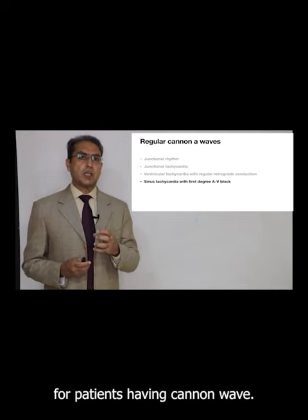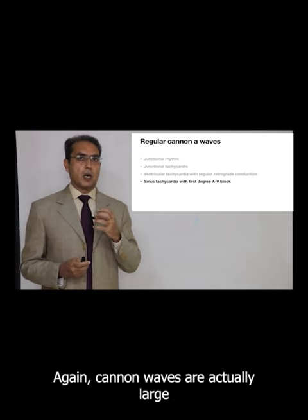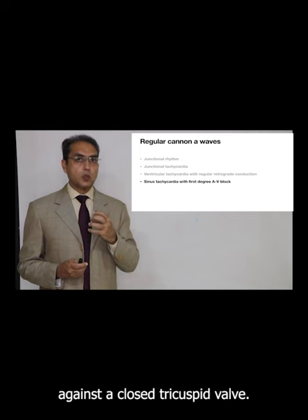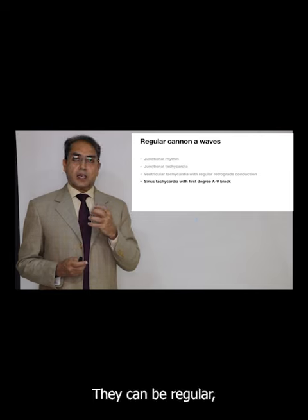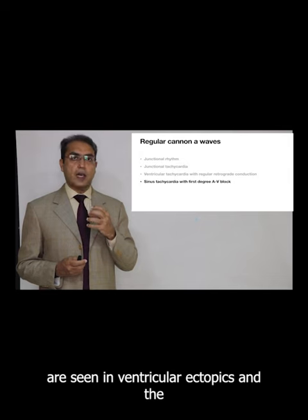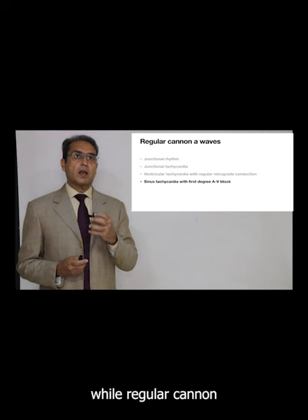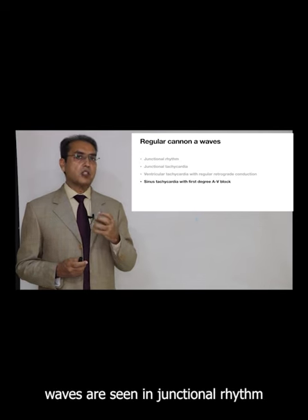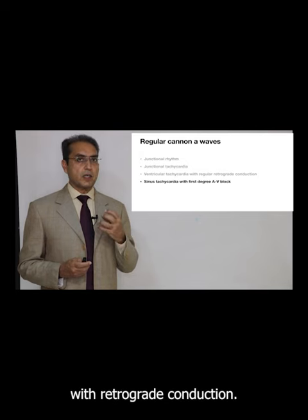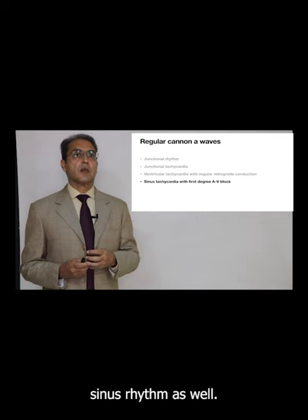So these are the various reasons for patients having Canon waves. Canon waves are large A waves because of atrial contraction against a closed tricuspid valve. They can be regular or irregular. Irregular Canon waves are seen in ventricular ectopics and complete (third degree) heart block, while regular Canon waves are seen in junctional rhythm, junctional tachycardia, or ventricular tachycardia with retrograde conduction, and in some patients with first degree heart block in sinus rhythm as well.